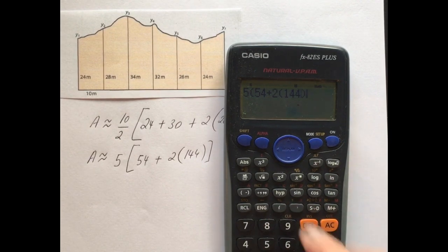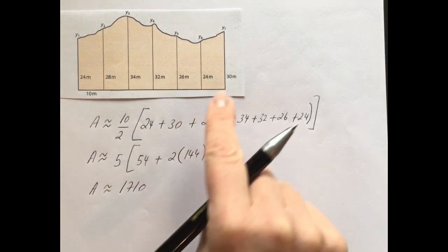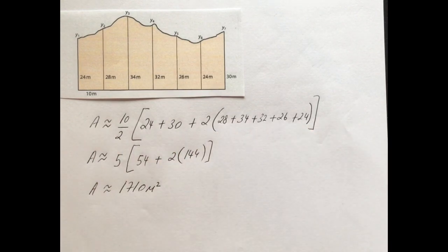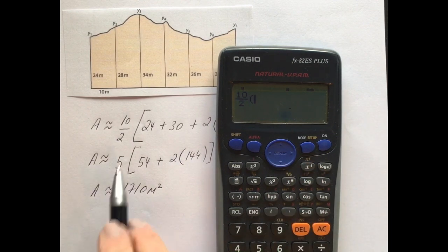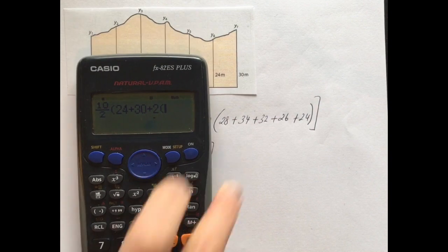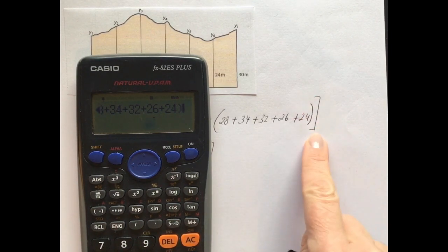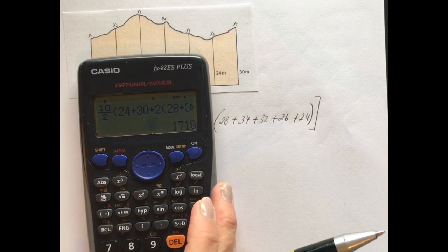So 24 plus 30 is 54, and then 2 times (28 plus 34 plus 32 plus 26 plus 24) equals 2 times 144. So we have 5 times (54 plus 2 times 144), which gives 1710. Don't forget it is area, so the units are meters squared. If you're putting the whole thing into the calculator, type 10/2 times (24 plus 30 plus 2 times (28 plus 34 plus 32 plus 26 plus 24)) and press equals - you'll get 1710 meters squared.